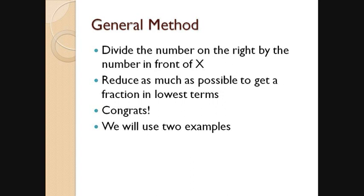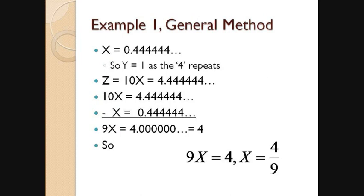Now we'll go into two examples. The first one is 0.4444. So again, we have one number, the 4, which repeats, so we use y equals 1. Our number z is just 10 to the power of 1 times x. If we move the decimal point over one spot, we'll have 4.44444. If we subtract our smaller number from our larger number, all of the 4s after the decimal point cancel out. On the left side, we have 9 times our fraction x equals 4. So if we divide 4 by the number on the left, we have our fraction of 4 ninths.